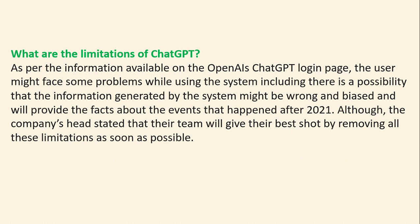What are the limitations of ChatGPT? As per the information on OpenAI's login page, users might face problems including the possibility that information generated may be wrong or biased, and the model's knowledge of events is limited to 2021. The company has stated their team will work to address these limitations as soon as possible.